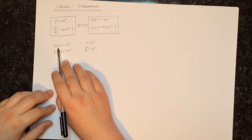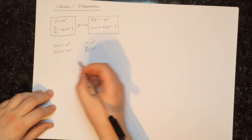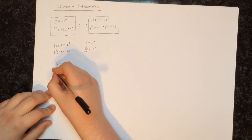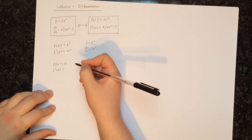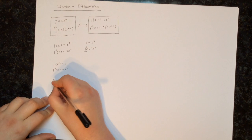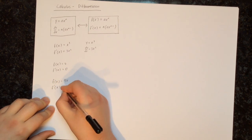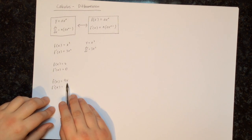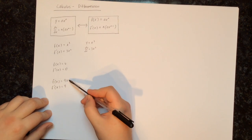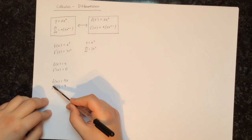We will be using both notations going forward. Next, let's try f of x equals 4. The derivative f dash of x equals 0, because 4 is a constant and the derivative of any constant is 0. Next, f of x equals 9x. We have a number times x to the power of 1, so when we differentiate, the x disappears and we're left with the number. So f dash of x equals 9.